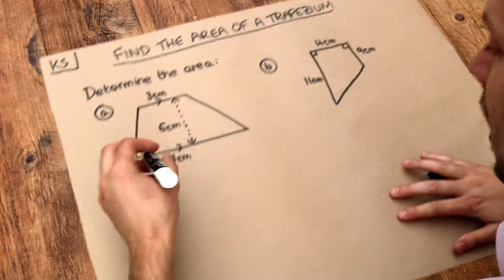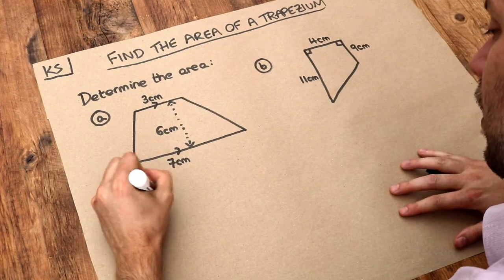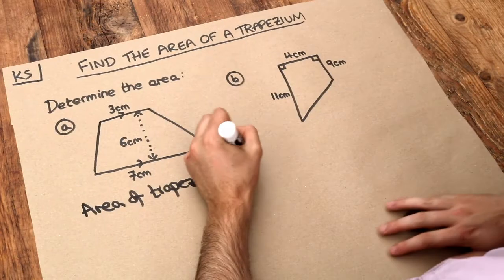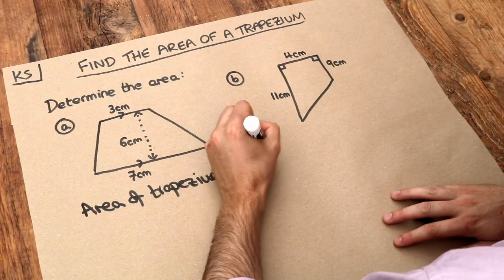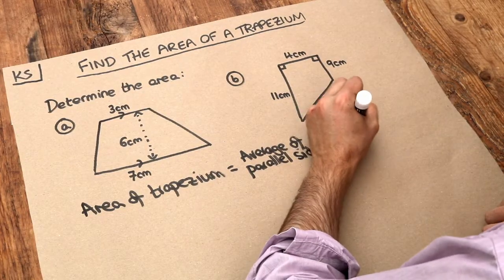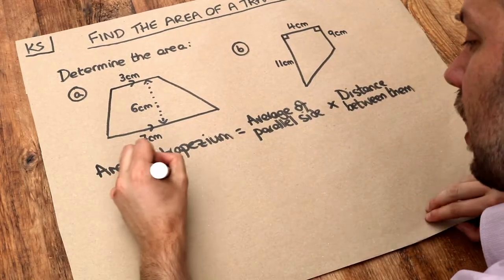Now there's one formula to find the area of a trapezium and it works like this. The area of a trapezium is equal to the average of the parallel sides multiplied by the distance between them and if you want a formula without words...